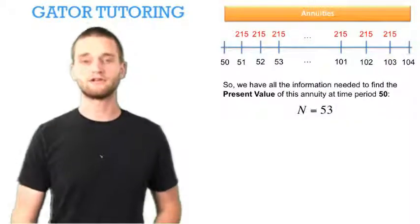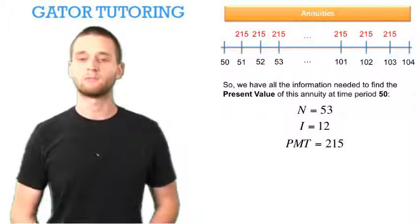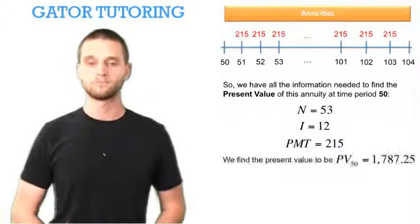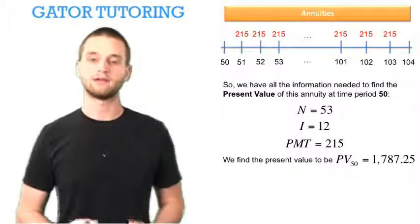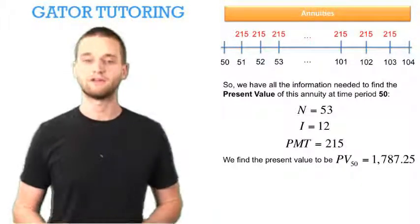We put 53 in for N, we put 12% in for the interest, and we put $215 in for the payment. We found the present value to be $1787.25 in period 50.